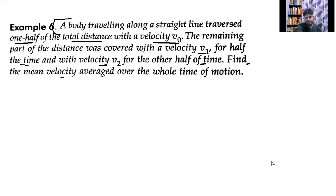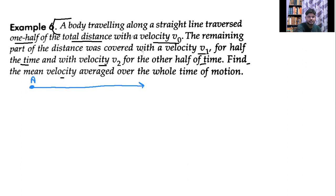Now I will explain what is given and what we have to find. The body — whether it's a car, bike, or point — travels along a straight line. Let x be equal to the total distance. The first half of the total distance is traversed with velocity v0.